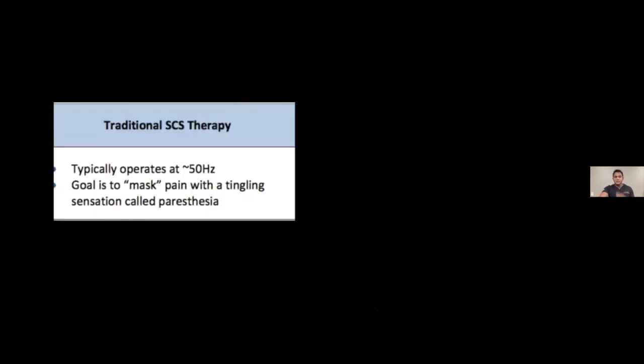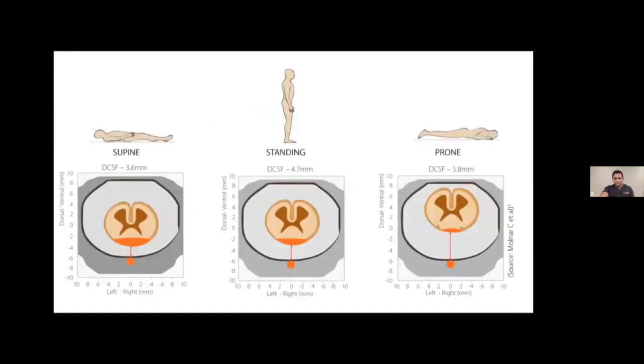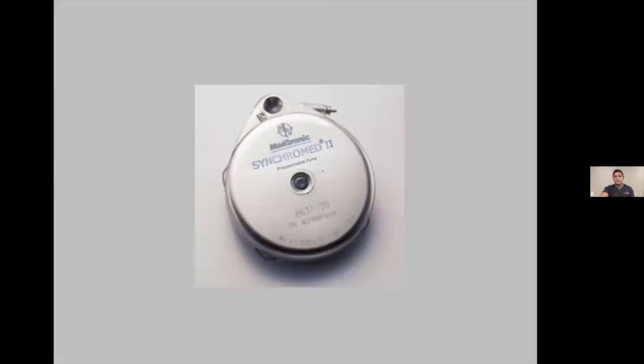We have different patterns of stimulation: burst stimulation, traditional therapy versus what they call HF10. HF10 is a different type of treatment with high frequency stimulation. Also, a lot of different changes in terms of positioning. Spinal cord stimulation can account for sitting, standing, bending, and deliver the same amount of electrical current.